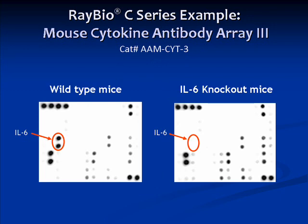Here we show a typical result using the mouse cytokine antibody array 3. Serum samples were taken from a wild-type mouse and an IL-6 knockout mouse. IL-6 was readily detectable in the wild-type sample, whereas no IL-6 was detected in the knockout. Interestingly, levels of other cytokines were also altered in the IL-6 knockout mouse.